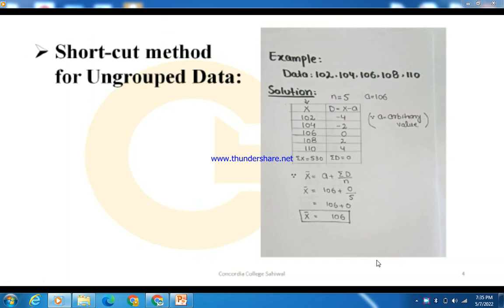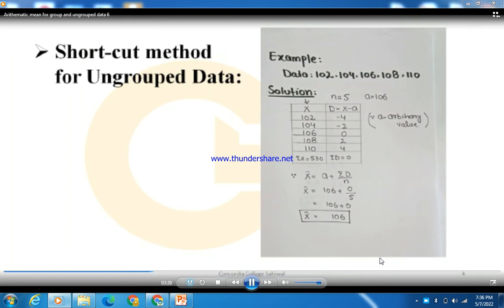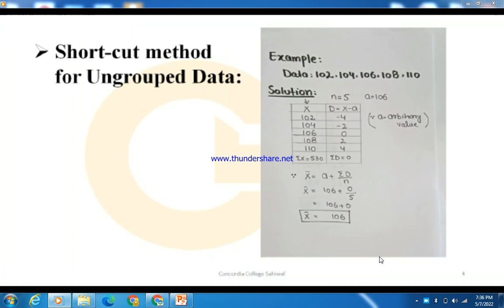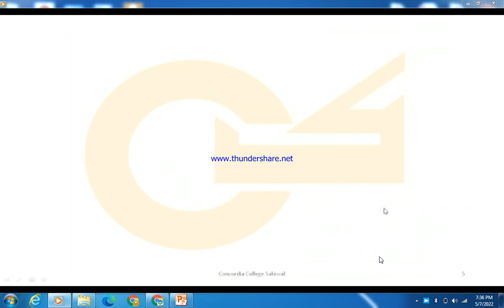In the previous lecture using the direct method, the answer was 106. Using the shortcut or indirect method, the answer is also 106. This is how you solve arithmetic mean problems using either the direct method or shortcut method.